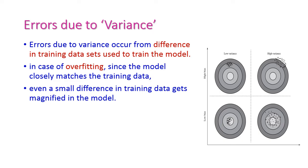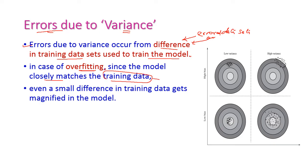The next one is errors due to variance. It occurs because of the difference in the training data set used to train the model — that is, error data or outliers are used to train the model. This is the overfitting. When overfitting occurs, we get error due to variance, meaning the model is closely matched to training data but highly deviated from the test data. Even a small difference in the training data gets magnified in the model.